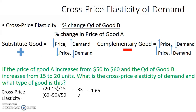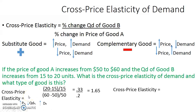A positive cross-price elasticity indicates a substitute good. Using the train logic: if price of A increases, quantity demanded of A decreases by the law of demand, but quantity demanded of B increases — they move in opposite directions, so they are substitutes. Alternatively, a positive numerator (QD of B increases) divided by a positive denominator (price of A increases) gives a positive — confirming a substitute good. There are two ways to determine the cross-price elasticity of demand.